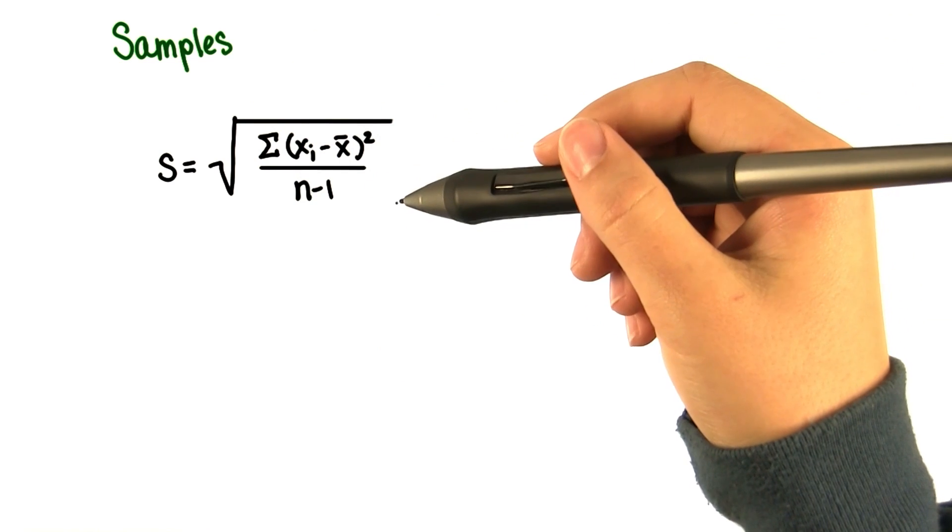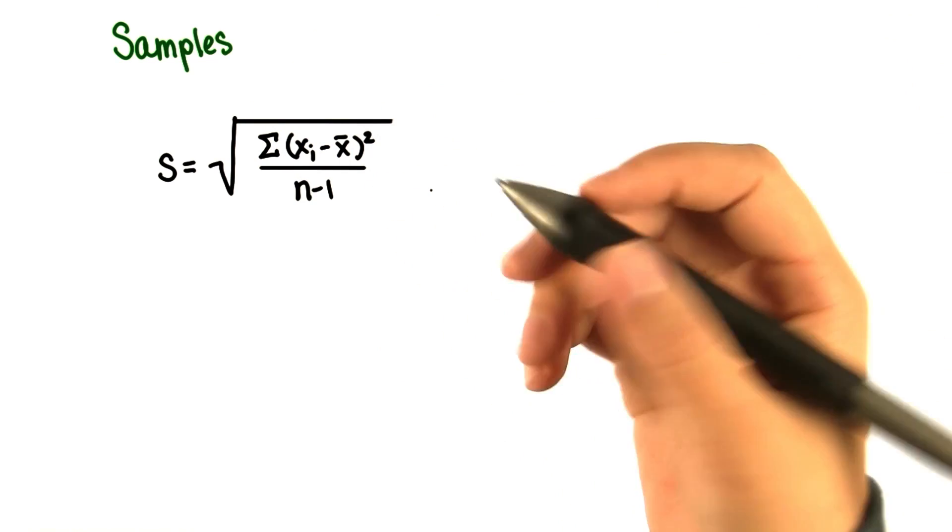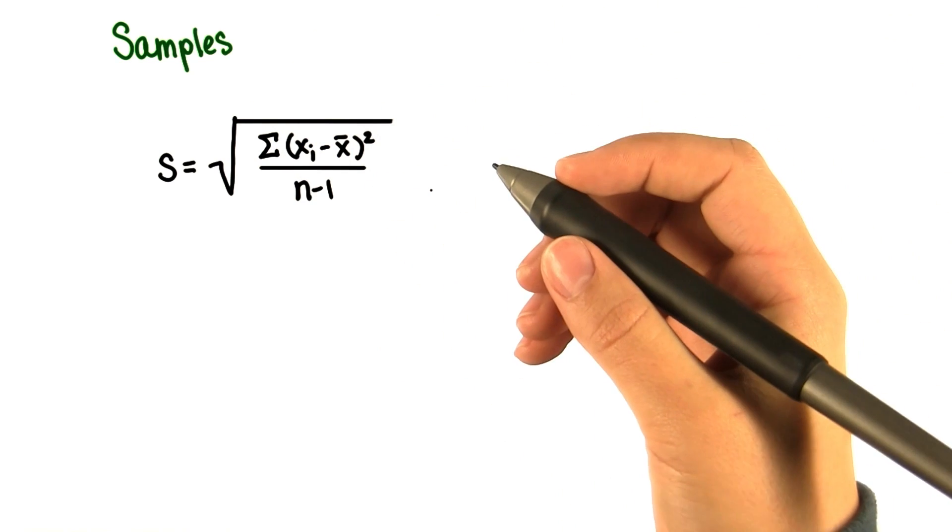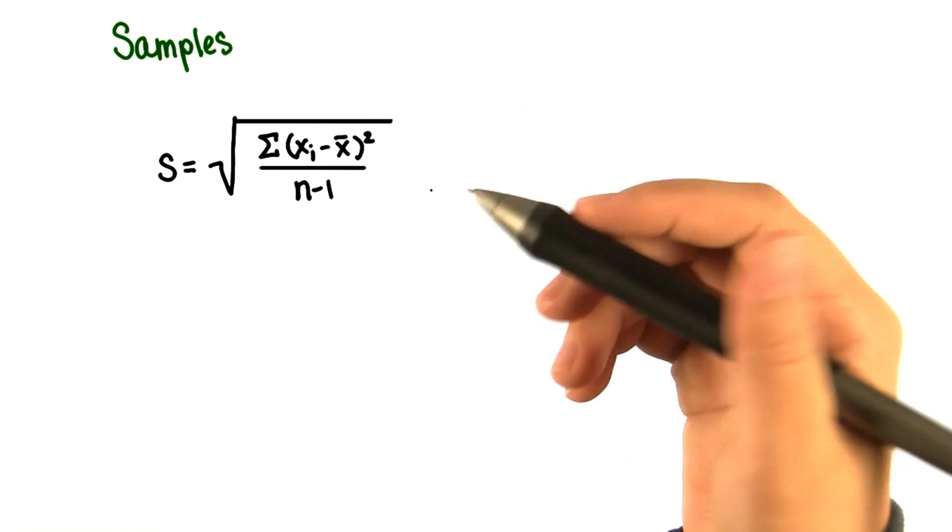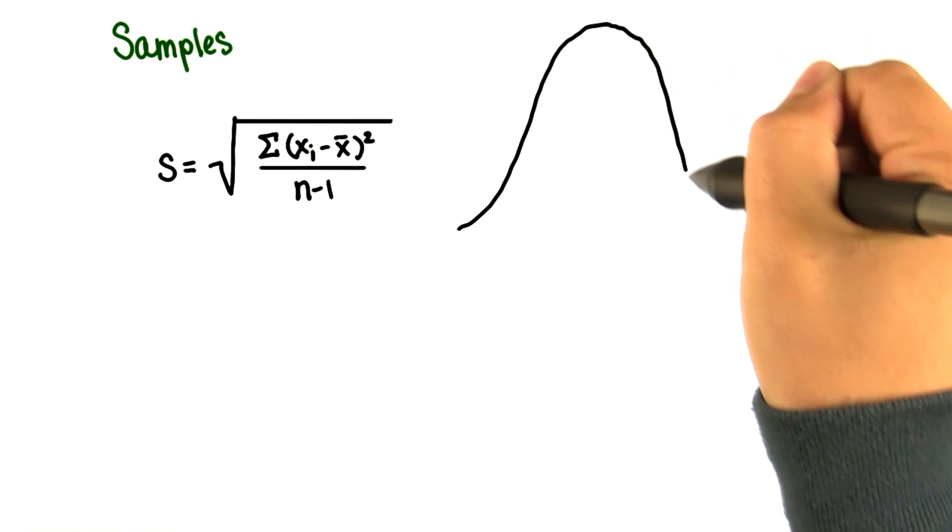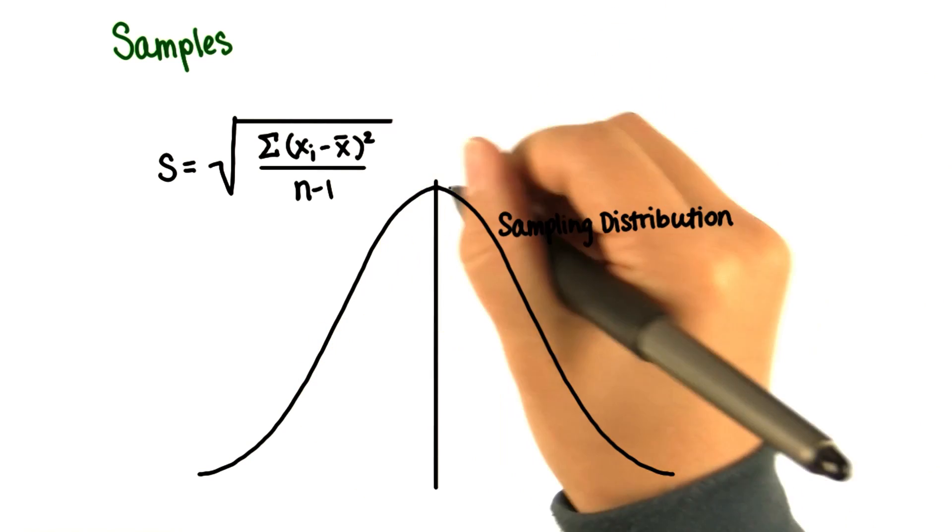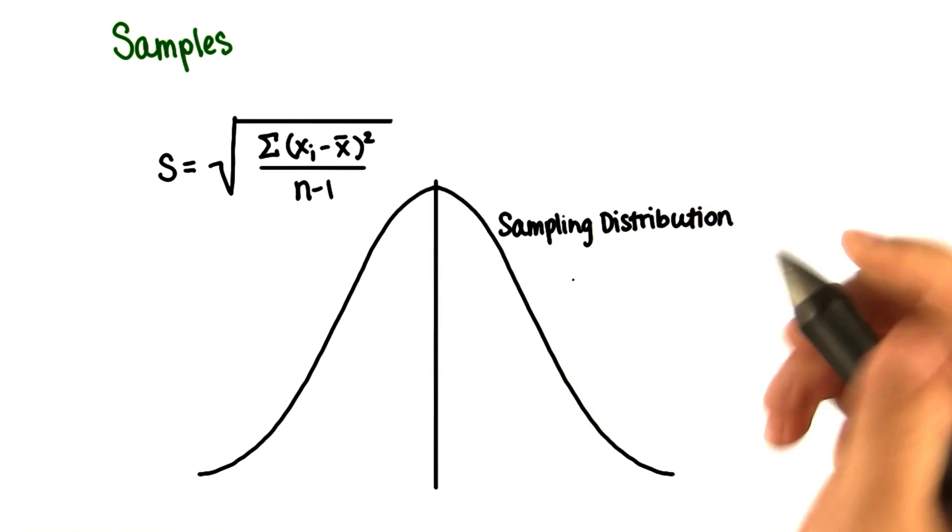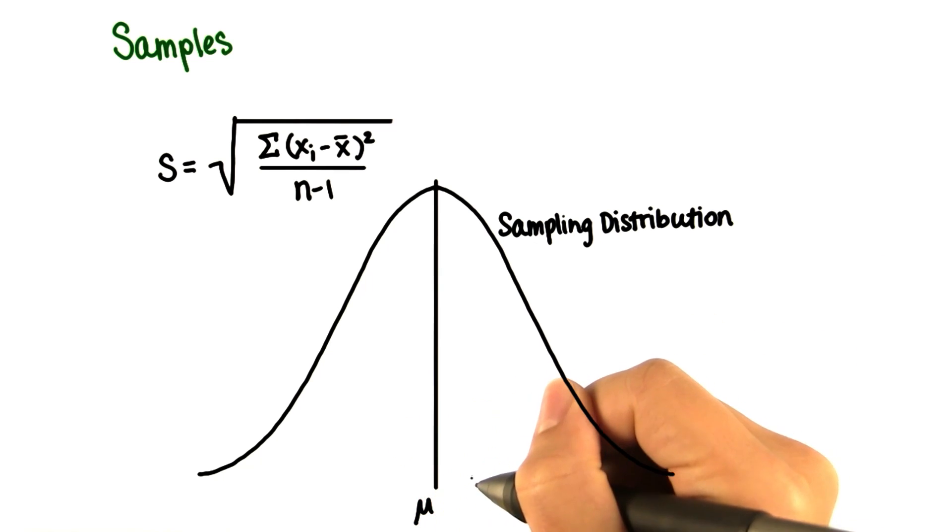Remember this from lesson 4? Normally, to find out how typical or atypical a sample mean is, we would find its location on the distribution of sample means, the sampling distribution. And we can determine the shape and parameters of this sampling distribution if we know the population parameters.